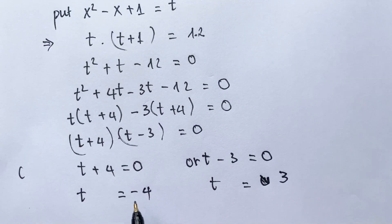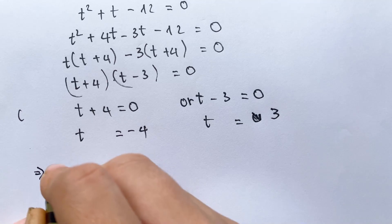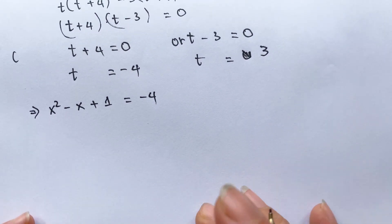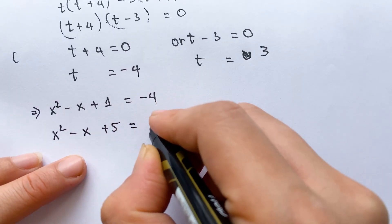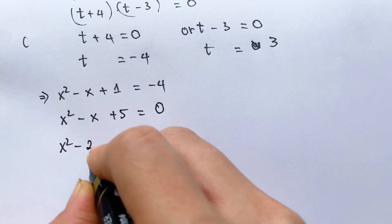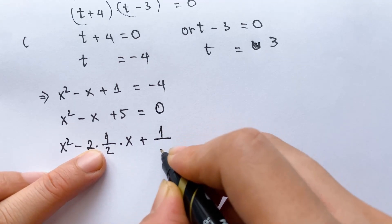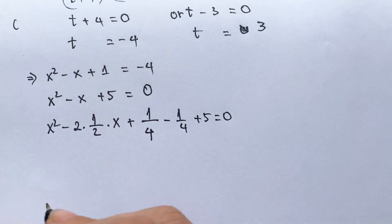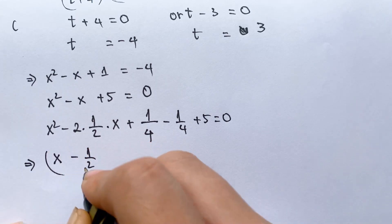We can replace t back into the equation. For t equals minus 4, we have x squared minus x plus 1 equals minus 4, so x squared minus x plus 5 equals zero. Completing the square: x squared minus 2 times one-half times x plus one-fourth minus one-fourth plus 5 equals zero. This gives x minus one-half, whole squared.